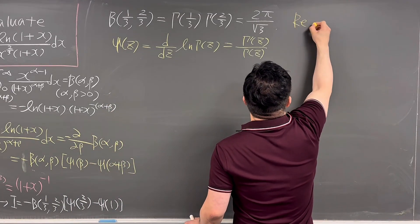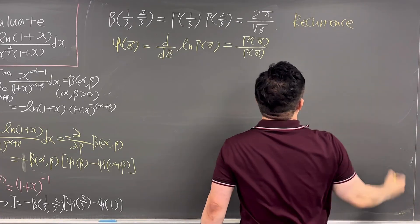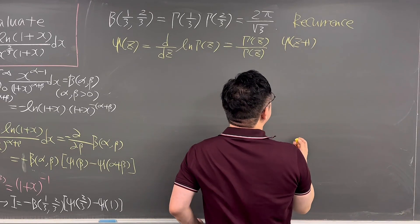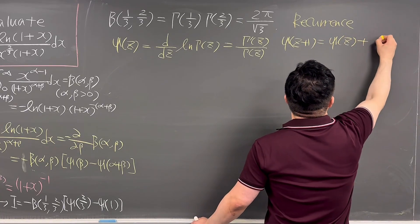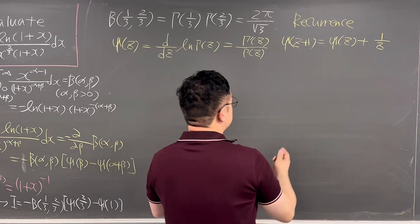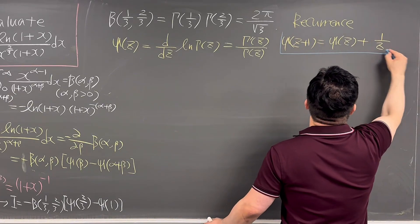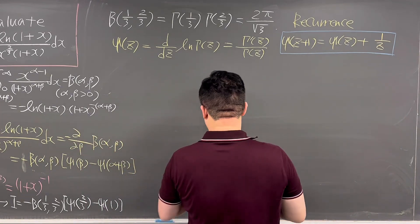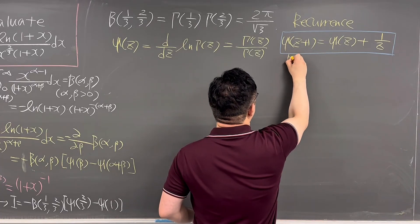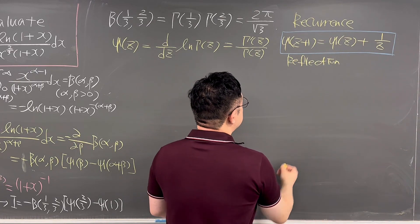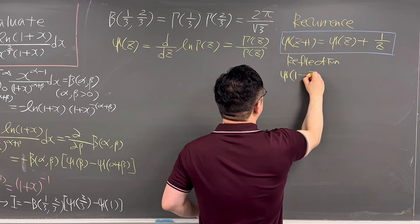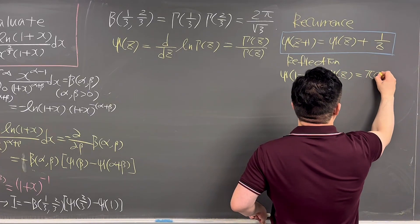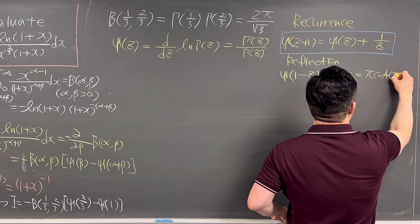The recurrence relation states ψ(z + 1) = ψ(z) + 1/z. The reflection formula states ψ(1 − z) − ψ(z) = π · cot(πz).